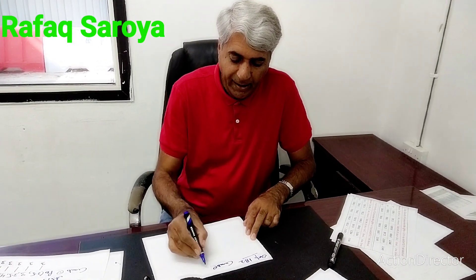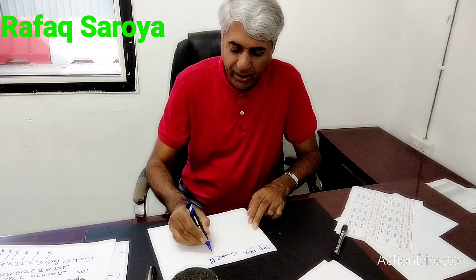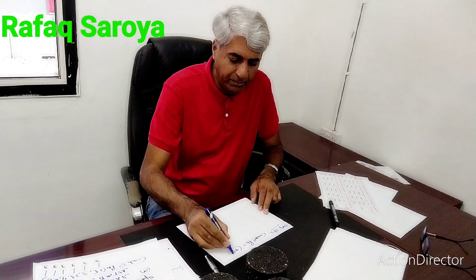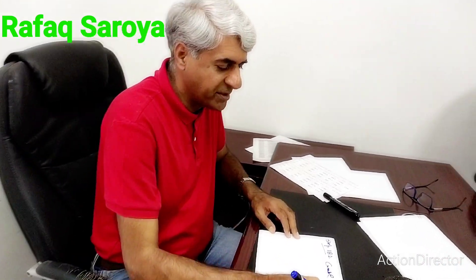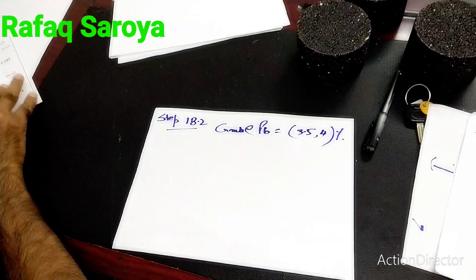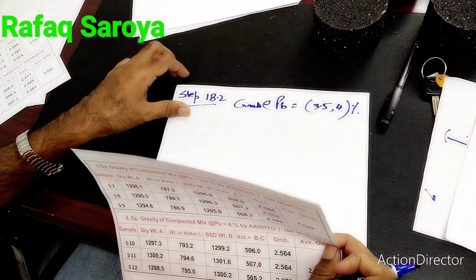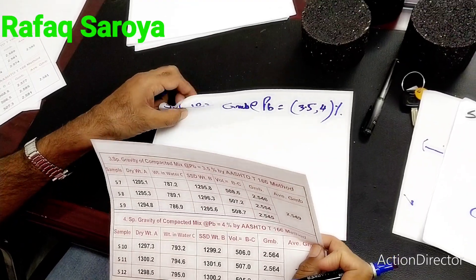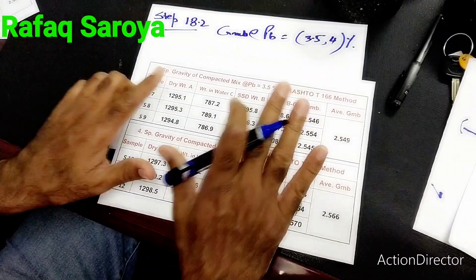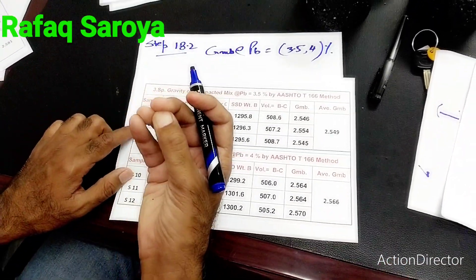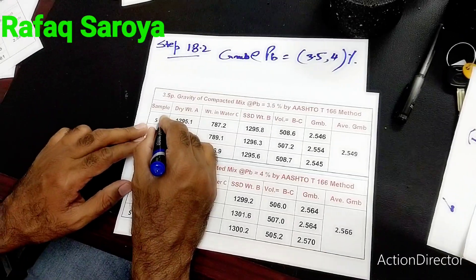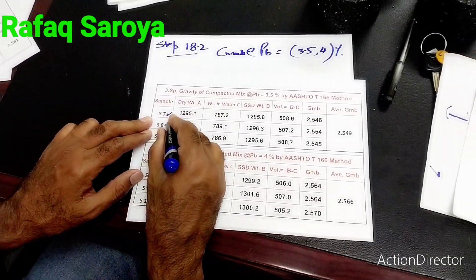Gmb at Pb is equal to 3.5% and 4%. Now I have tabulated their values. I will give you the values for your understanding and will not do any more calculation — you will have to follow upon this. I have taken samples and the identification names given to them are S7, S8, and S9.